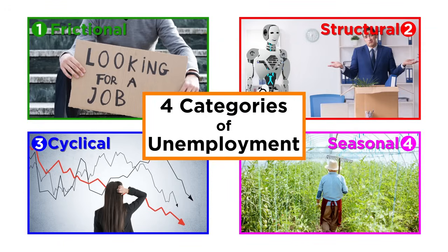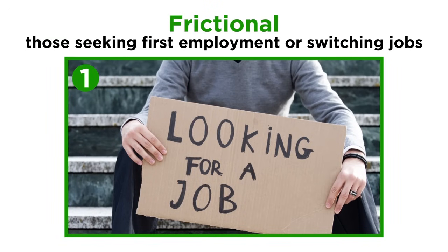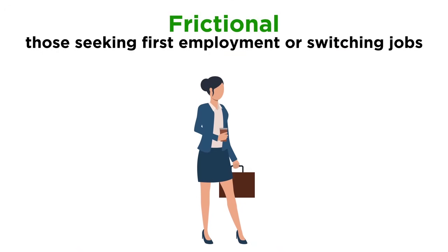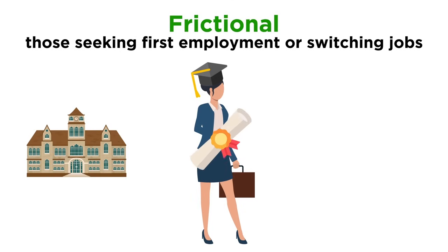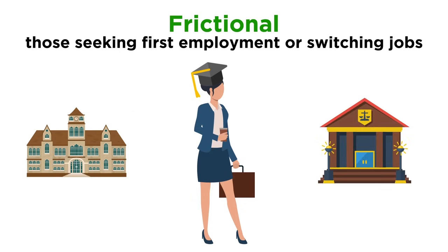Frictional unemployment refers to unemployed people who are looking for jobs for the first time or switching jobs. For example, a college student might need some time to find the right position after graduating. Take Harriet, for example. Harriet may have graduated from law school three months ago, but she had to spend that time interviewing with various law firms to find the one that best suits her needs and interests.